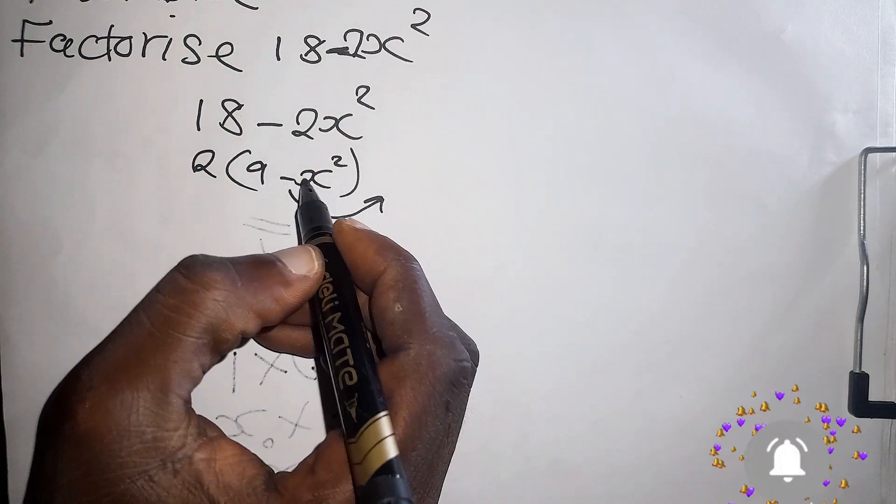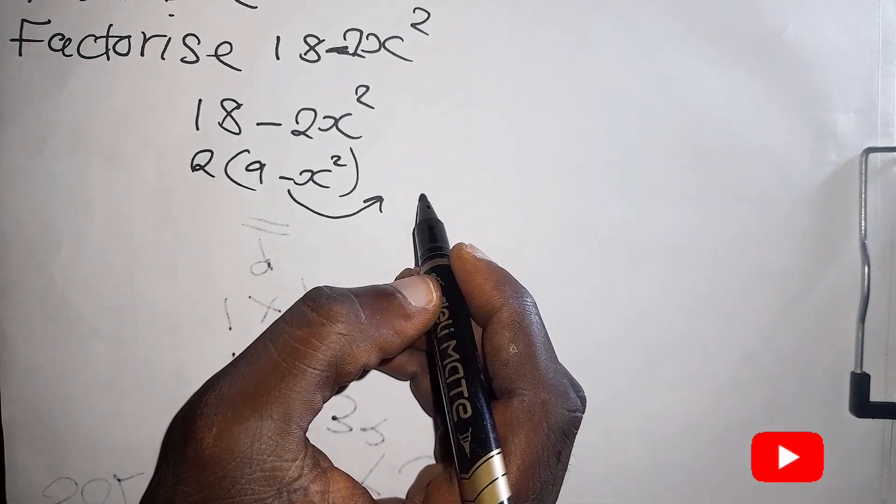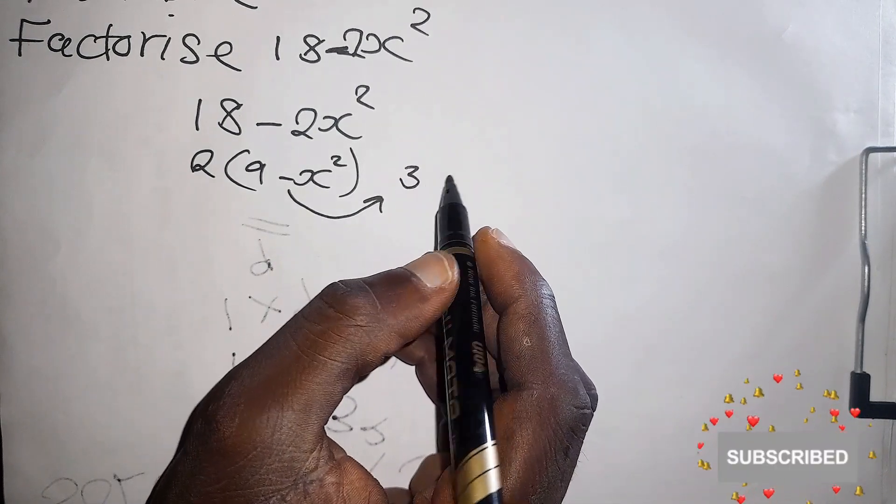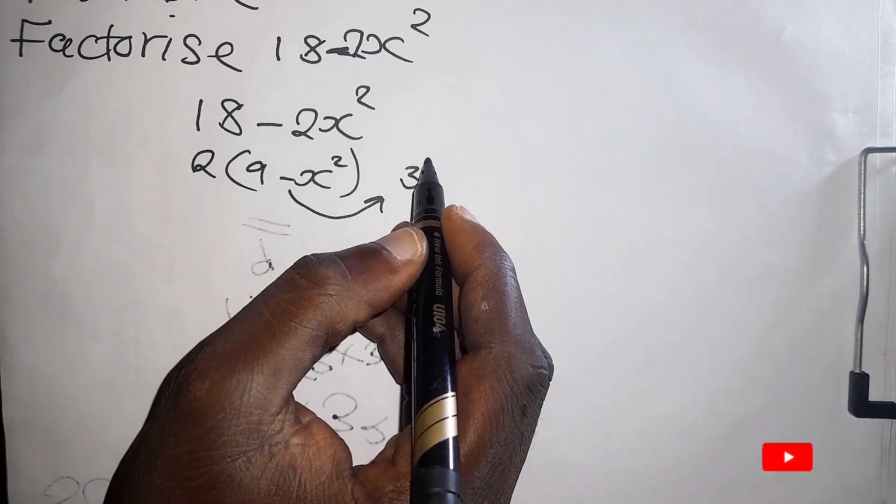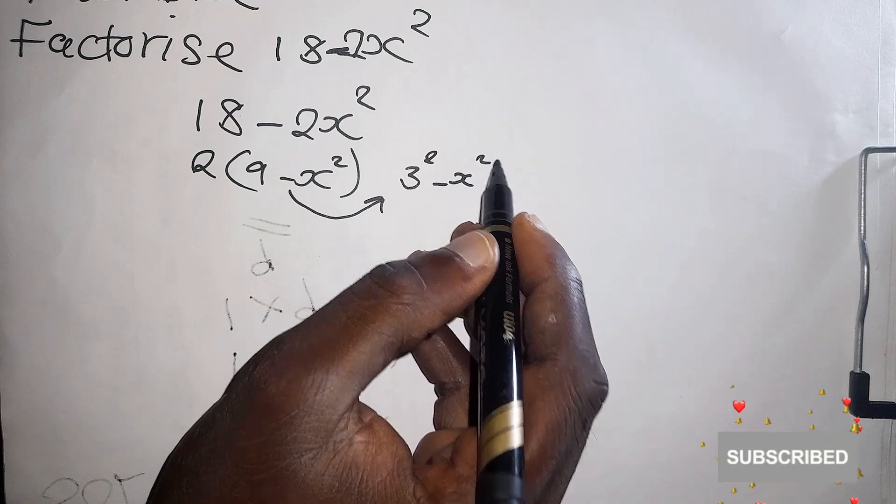And remember what's inside here is a difference of two squares. So we have a difference of two squares, which when you expand or you factorize,